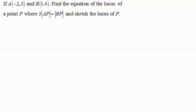Here's another example, very similar to the previous one but just a little harder. We've got point A with coordinates (-2, 3) and B with coordinates (1, 4). We need to find the equation of the locus of point P where 3|AP| = |BP|, and sketch the locus of P. Do try and have a go at this before looking at the video solution.